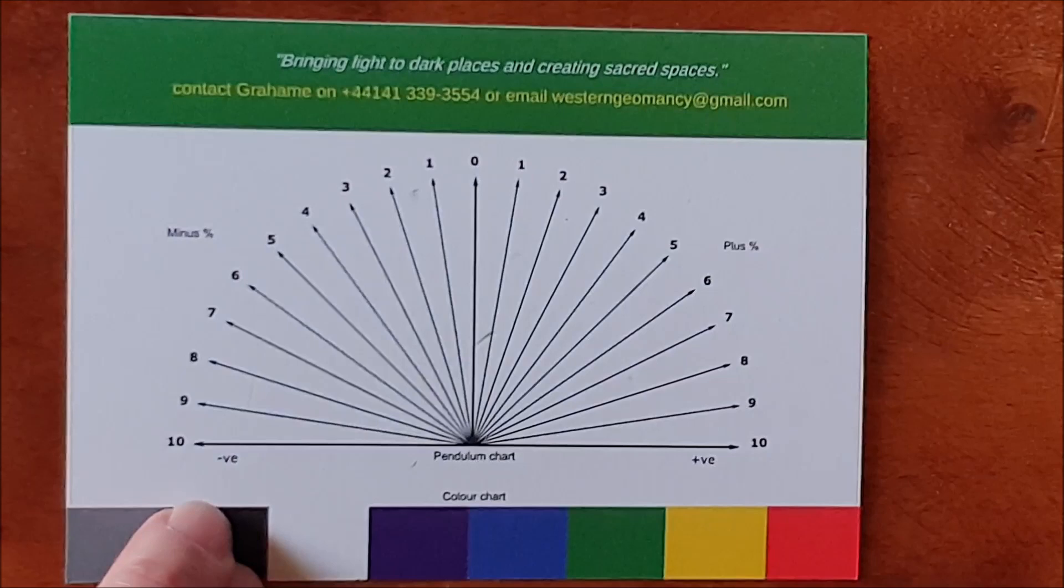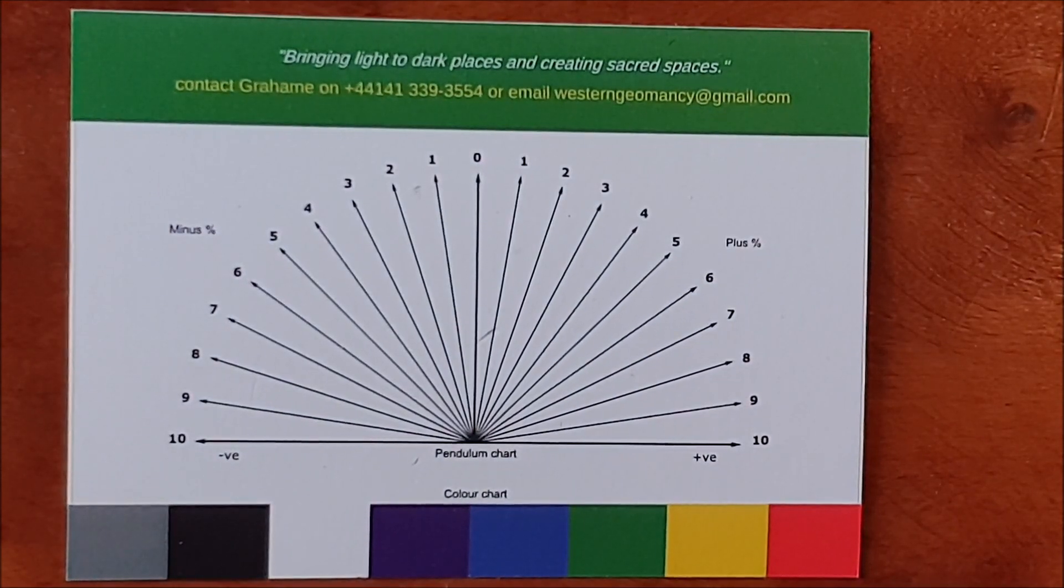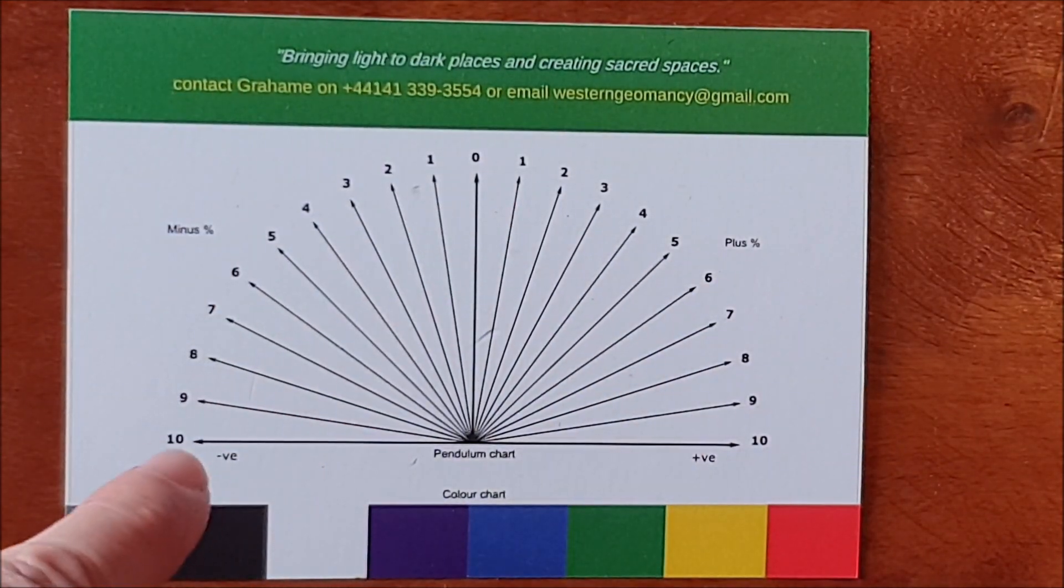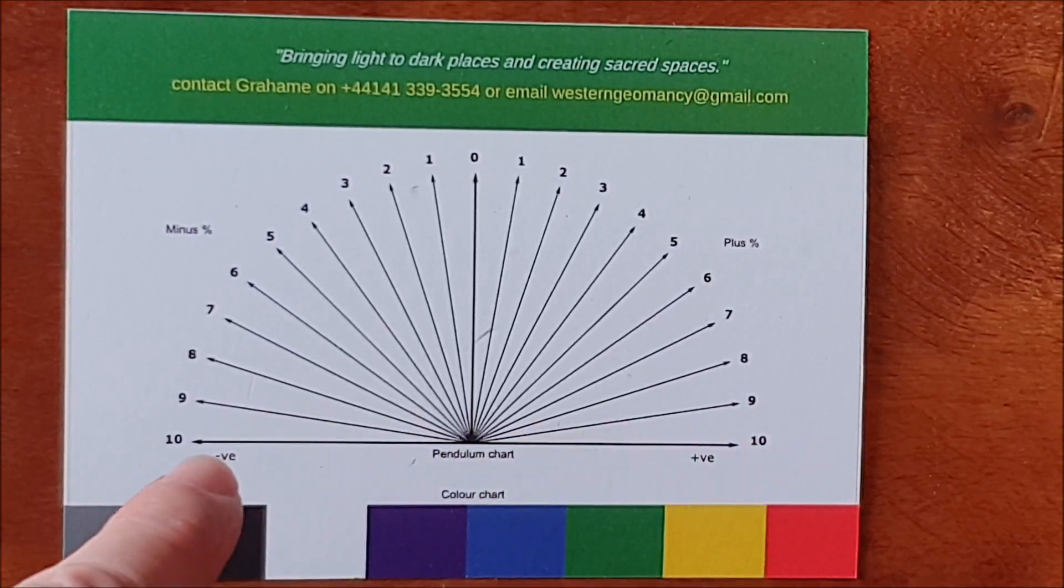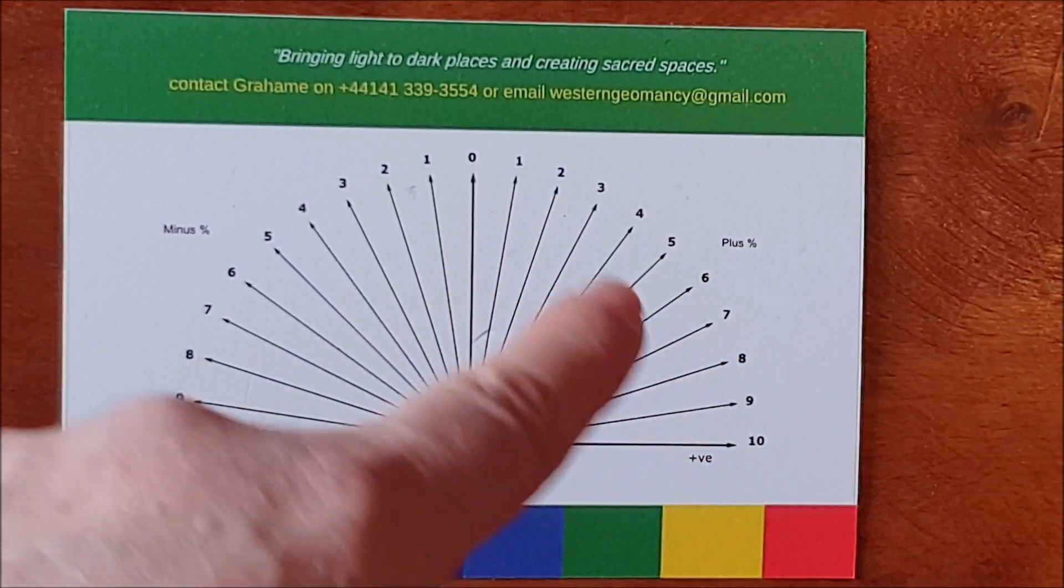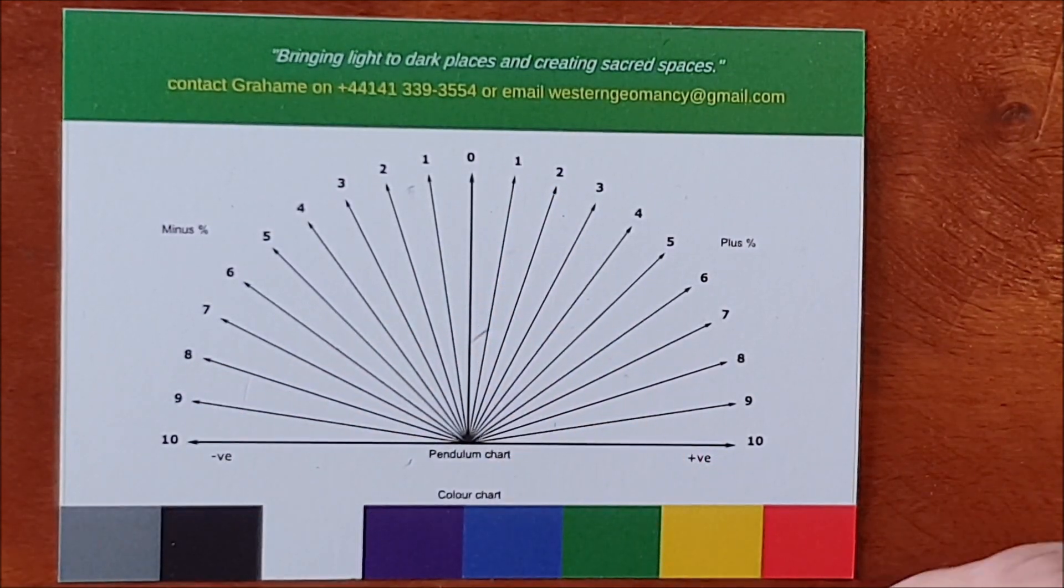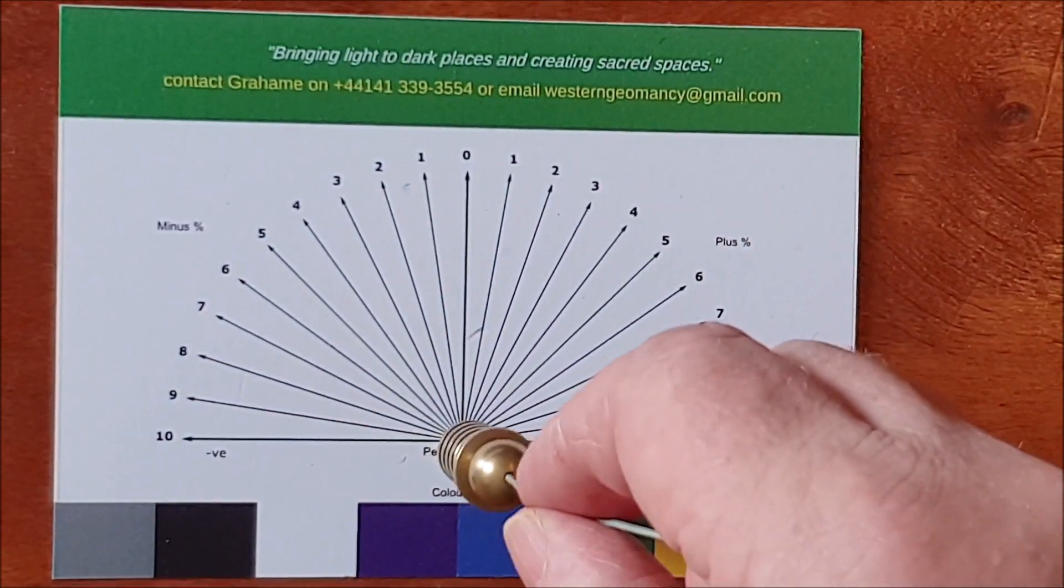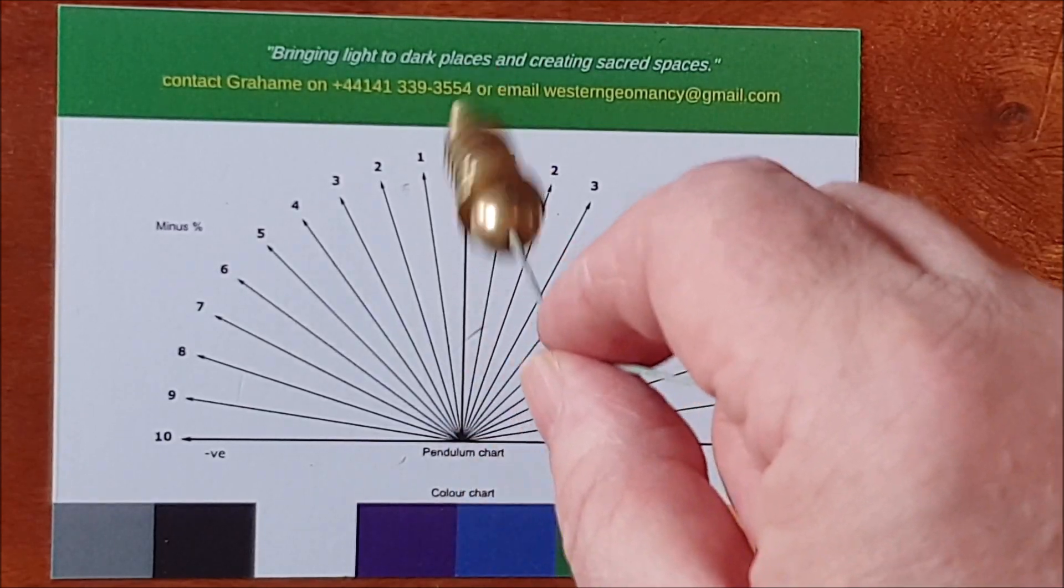This is just a simple zero to ten chart. It goes from zero in the middle here down to ten either side. This side is the negative side and this side is the positive side. I hold my pendulum over the zero point here and start it swinging up and down this central line.